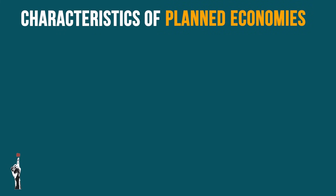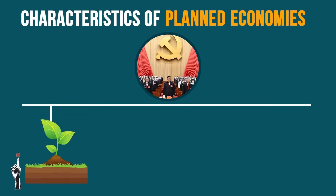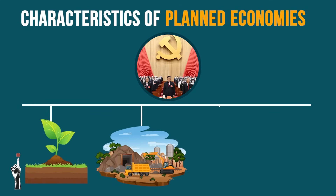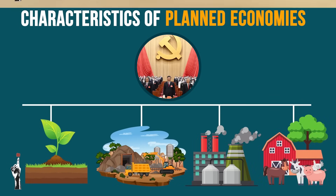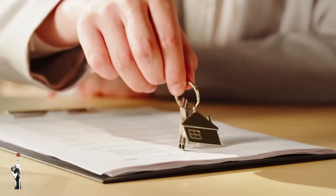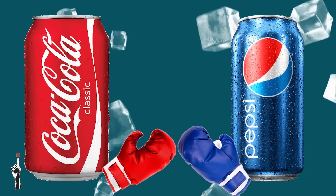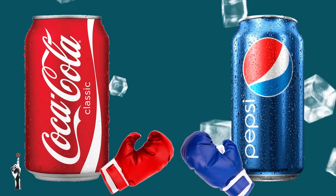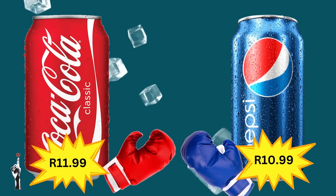The first characteristic states that the government owns all the land, natural resources, factories, and farms. Secondly, citizens are not allowed to own any property. Thirdly, there is no competition between businesses offering goods and services at different prices. Let's draw out our keywords.